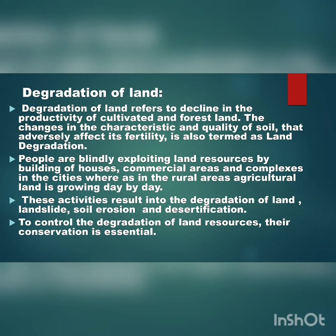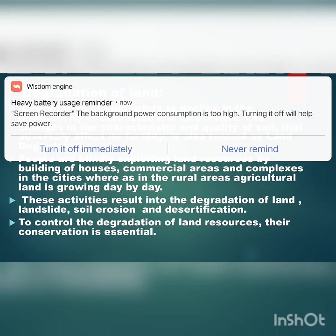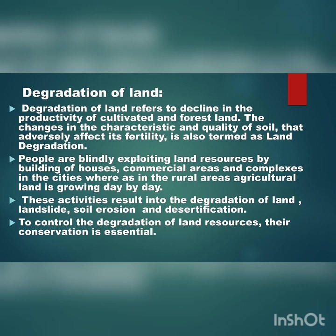Man himself and his activities are the prime cause of land degradation. People are blindly exploiting land resources by building houses, commercial areas and complexes in cities. Whereas in rural areas, agricultural land is being consumed day by day. In the process of claiming more and more land for use, man is destroying his prime resources. Deforestation, overgrazing, development of transport, and movement of people and cattle result in reduced growth of vegetation.